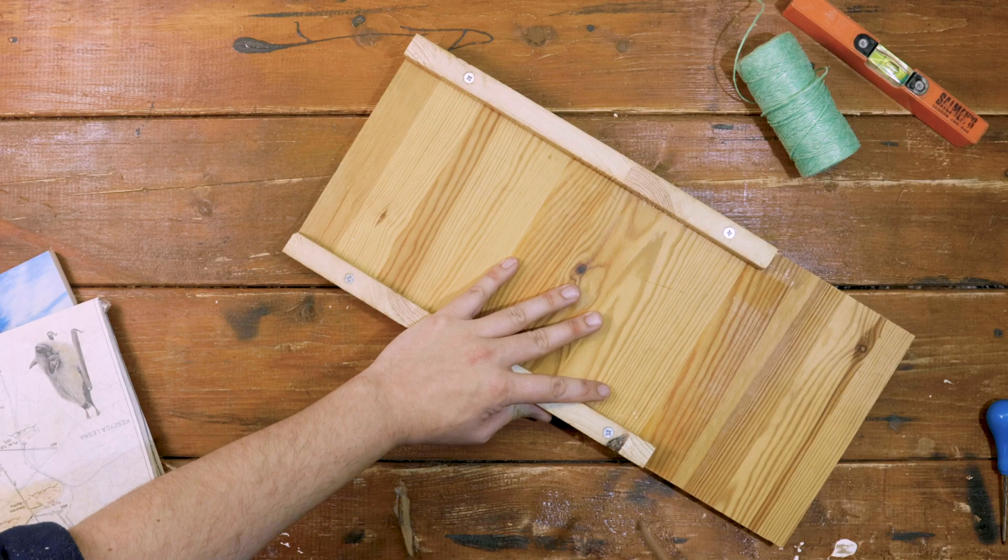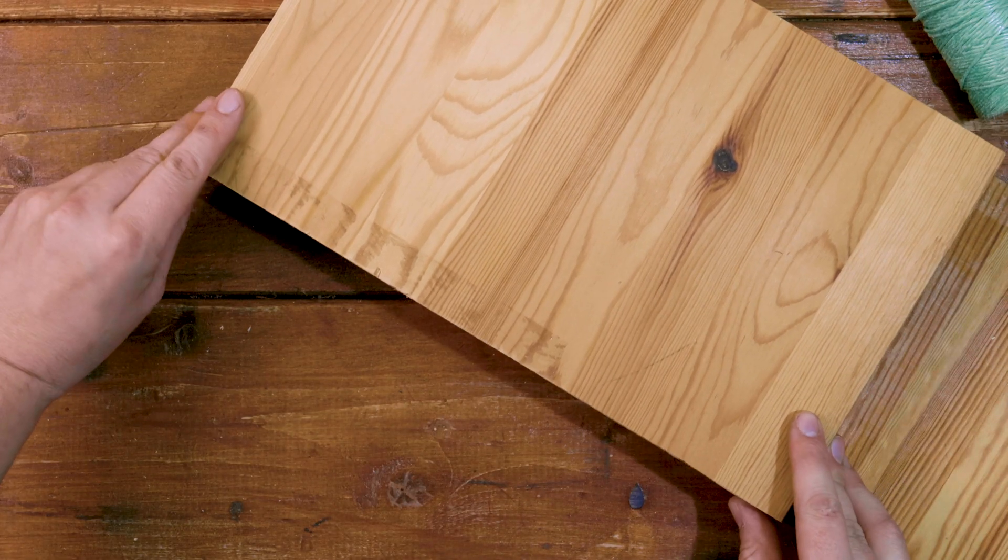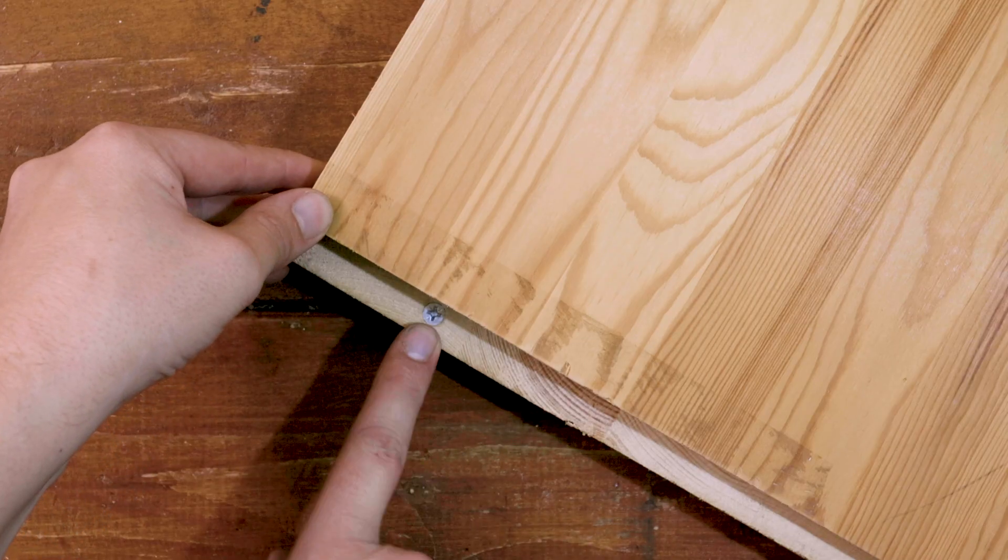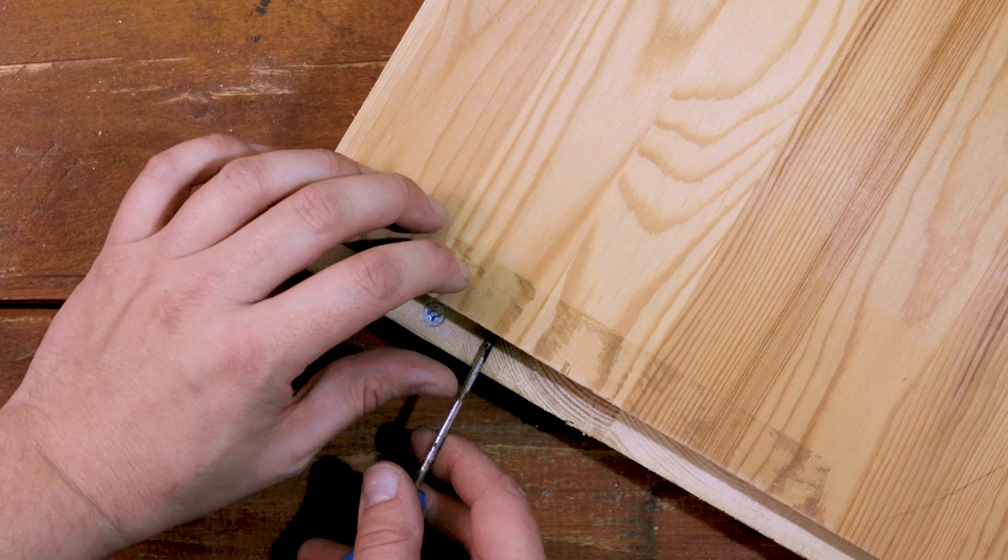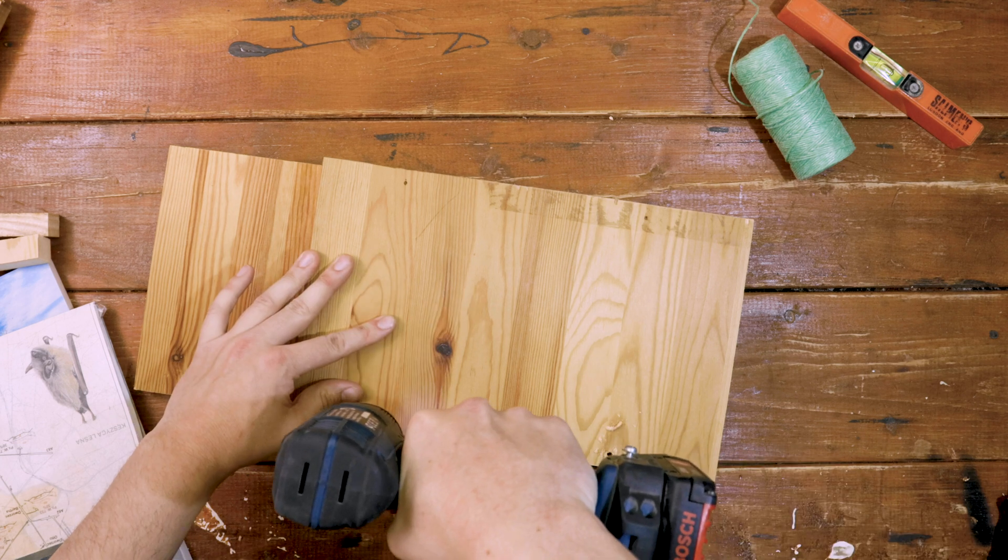OK, get the screws in and pop the next piece on top. The trick here is to drill away from the screws you've put in below. Pre-drill another four holes through the centre piece.